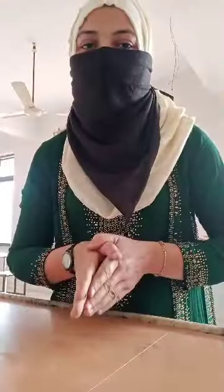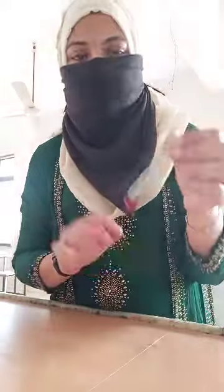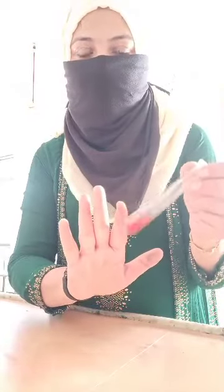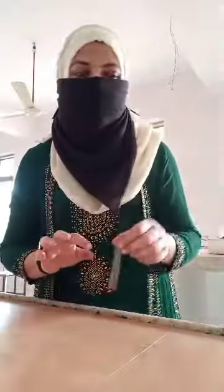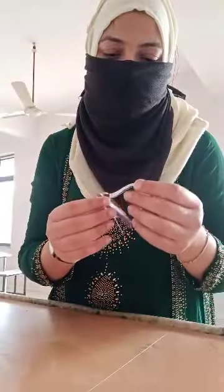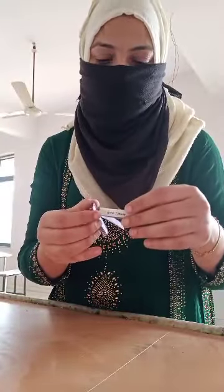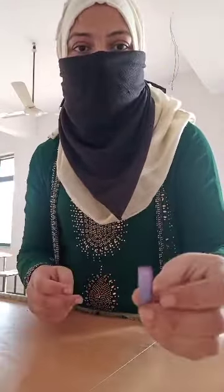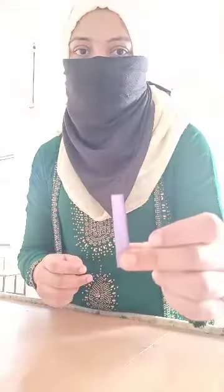Assalamualaikum dear students. First of all, we have seen all the tests of the alcohols. Now we are going to see the test of the phenols. The phenol color is like this — red in color — and we are going to check this particular compound. The first important test for phenol is checking it with the litmus paper. We are going to use the blue litmus paper and place a drop of our compound on it.